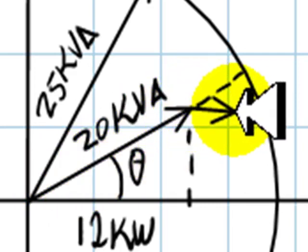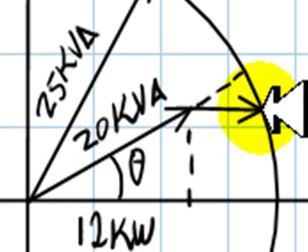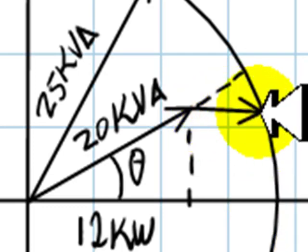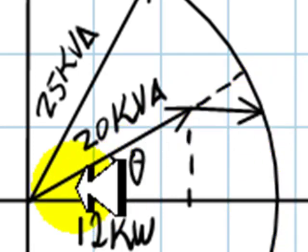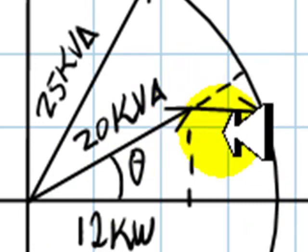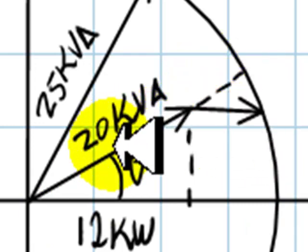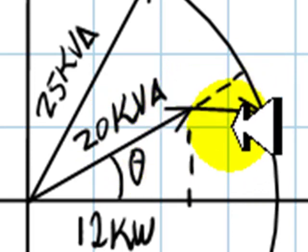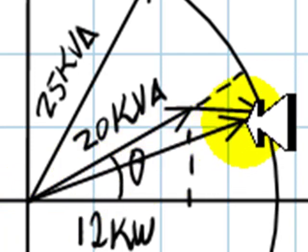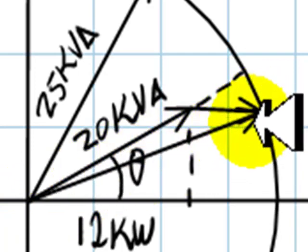So the extra load is going to be drawn horizontally because it's only resistive, it's only active power. I don't know how much it is, but one thing I know is that when we add them together, the new load plus the old load of 20 kVA, the total load is going to be 25 kVA, the full load capacity of the transformer.